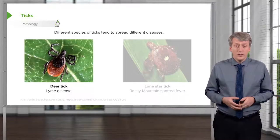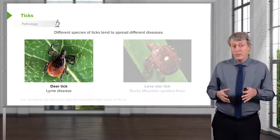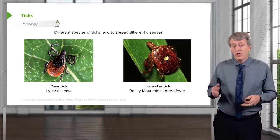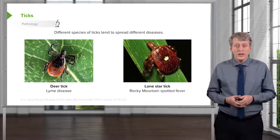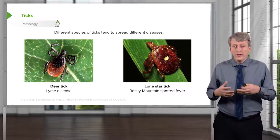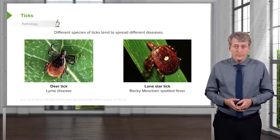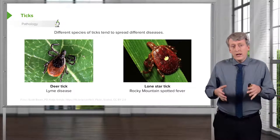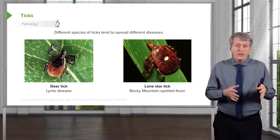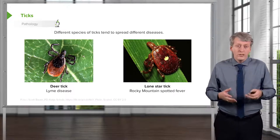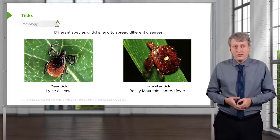The deer tick is most commonly implicated in Lyme disease, whereas the lone star tick is more implicated in Rocky Mountain spotted fever. It's important to know that different types of ticks are associated more typically with certain diseases.